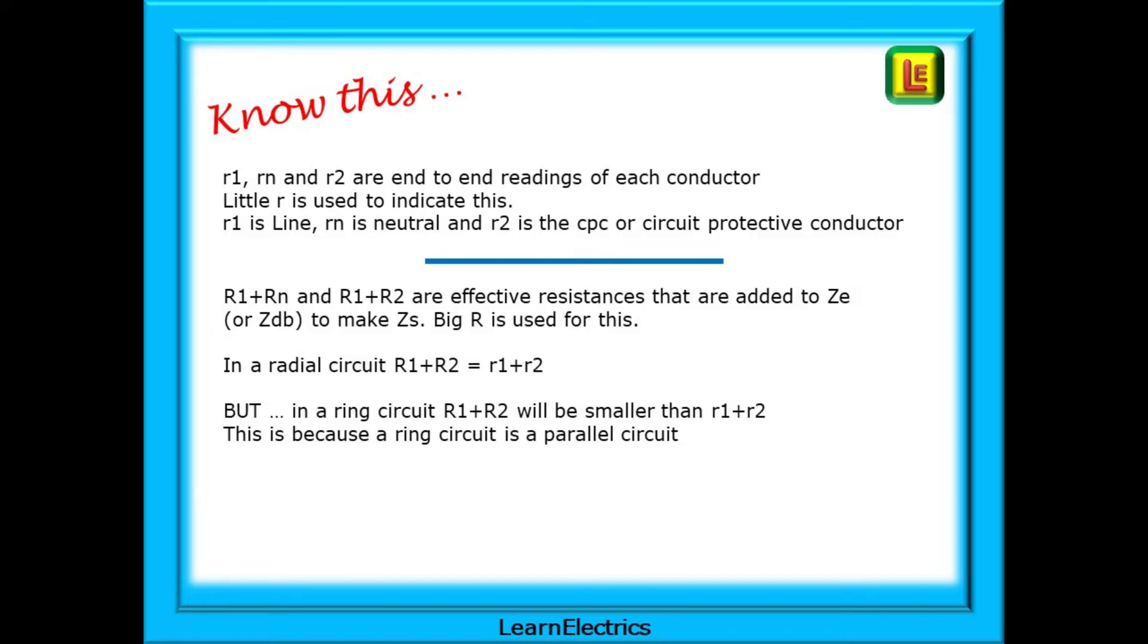In a radial circuit, big R1 plus R2 equals little R1 plus little R2. But in a ring circuit, big R1 plus R2 will be smaller than little R1 plus R2. This is because a ring circuit is a parallel circuit.